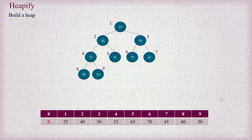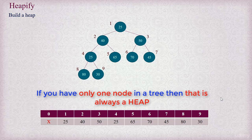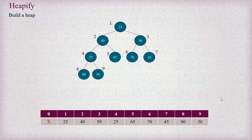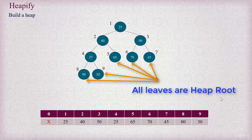Trivially, a tree with only one node is always a heap. That is, we can always think of a heap tree rooted at any leaf. You see that at index 9, which is a leaf, we can consider a max heap tree rooted at index 9. Same for other leaves. Therefore, for any almost complete binary tree, all leaves can be considered as a heap root.